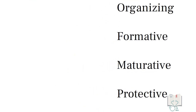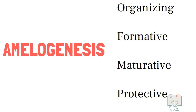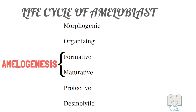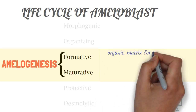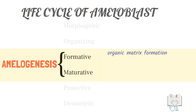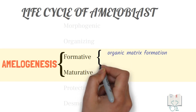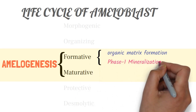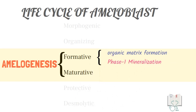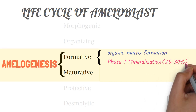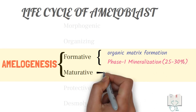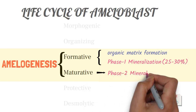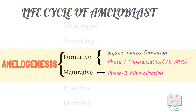In the life cycle of an ameloblast, amelogenesis occurs in the formative stage and the maturative stage. The whole organic matrix formation occurs in the formative stage. However, mineralization occurs in two phases: phase 1 occurs in the formative stage where 25 to 30 percent mineralization occurs, and phase 2 occurs in the maturative stage where the remaining 70 to 75 percent mineralization occurs.